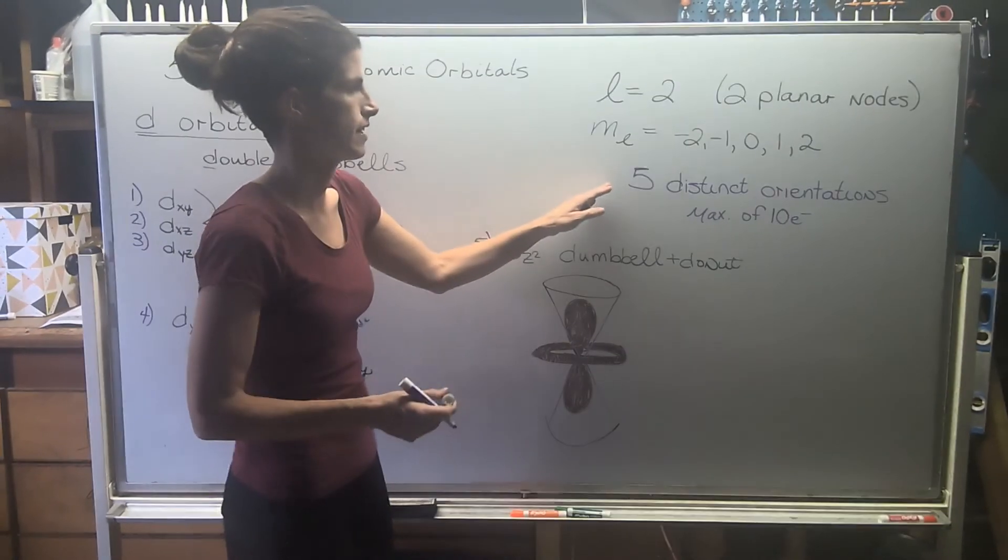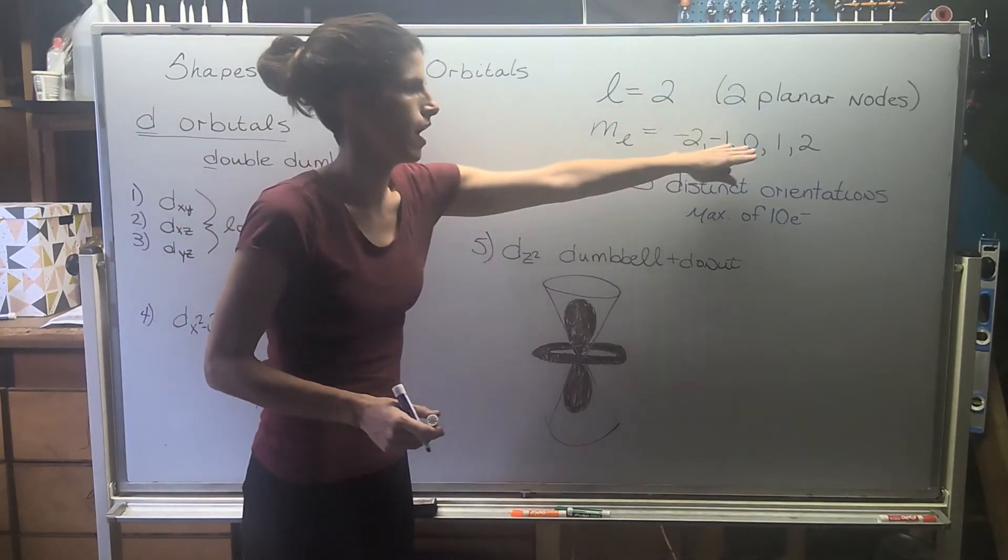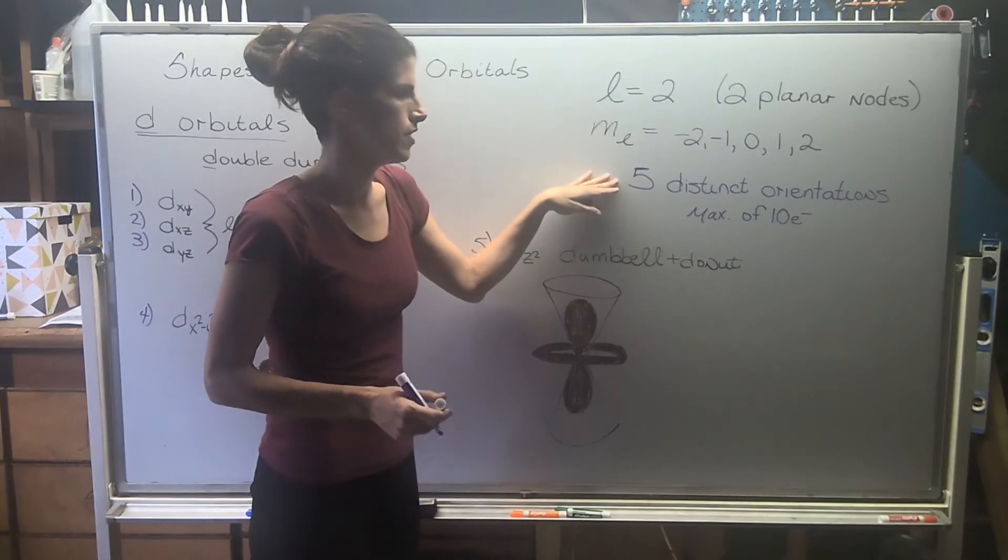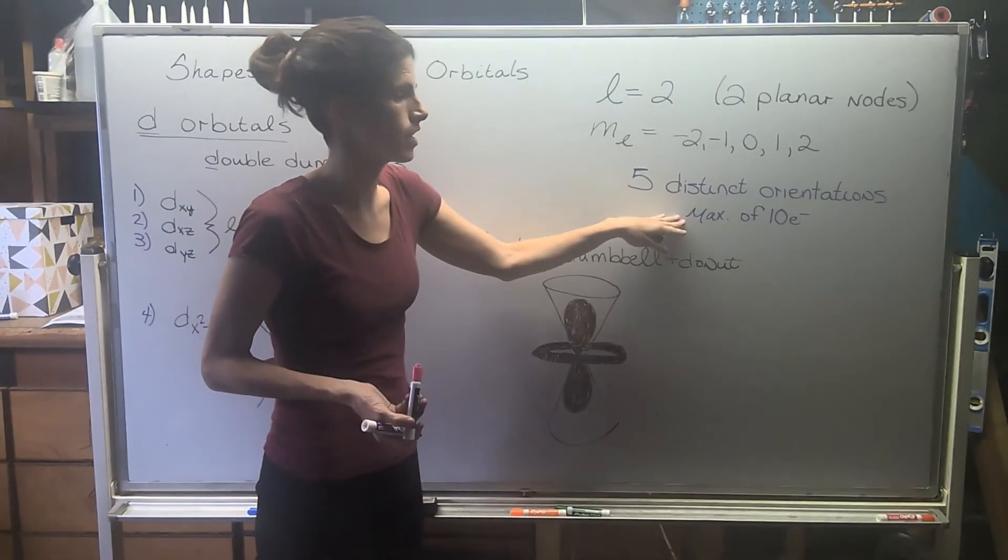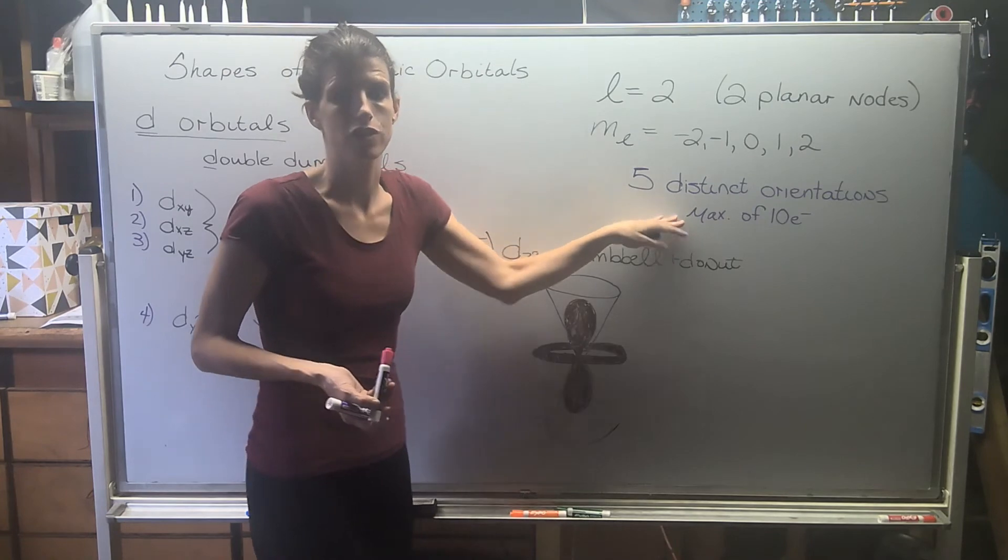This is how we get five numbers, and then five lines when you're doing your electron configurations, and a total of ten electrons.